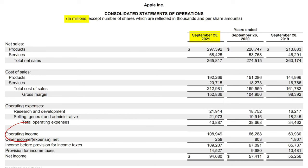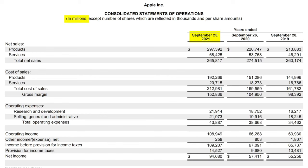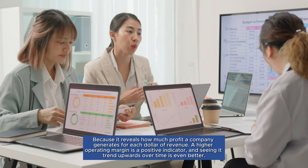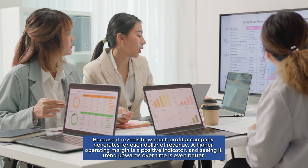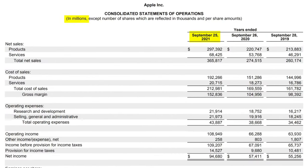Moving on to Operating Profit: this figure represents a company's profit before accounting for taxes and interest paid on debt. It's calculated by subtracting the total cost of sales and total operating expenses from revenue. An essential tool for analyzing performance is the operating margin — simply the operating profit divided by revenue — which reveals how much profit a company generates for each dollar of revenue. A higher operating margin is a positive indicator. In Apple's case, the operating margin was 24% in 2019 and rose to nearly 30% in 2021, reflecting strong financial performance and operational efficiency.